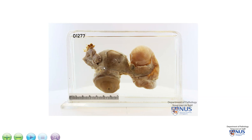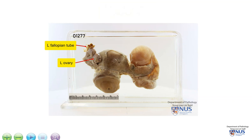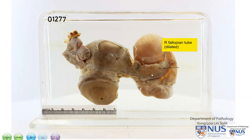Hello, this is a specimen of the uterus with the uterine cervix and this is the cervical os. Here is the left fallopian tube and ovary, and here is the right adnexal structures. This is a very dilated right fallopian tube and here is the right ovary, which has been slightly flipped upwards.